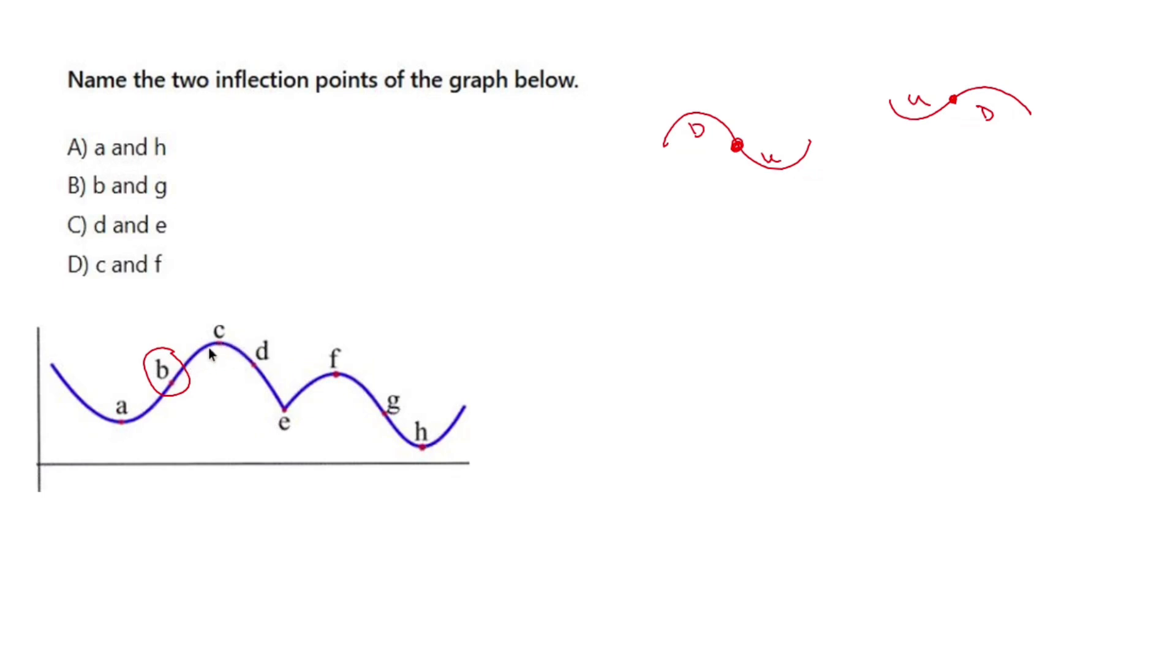Now this is still concave down, and it might be tempting to say E is an inflection point, but at E we still keep concave down. So it's not like there's a change in concavity, there's just two concave downs next to each other.